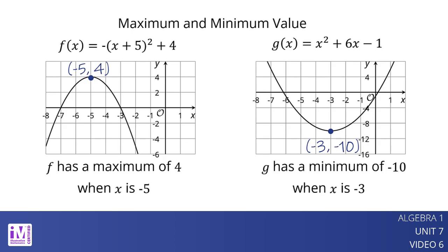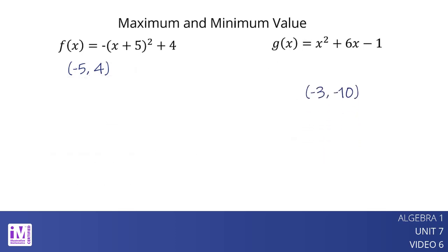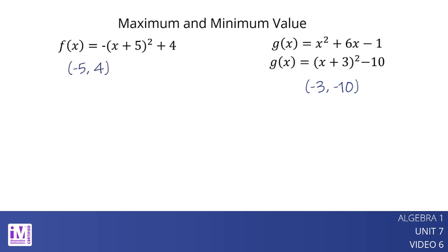How can we know without graphing whether the vertex of the graph is its minimum or its maximum? The vertex form can give us that information as well. Let's look more closely at function g. To see if the vertex (-3, -10) is a maximum or a minimum of g, we can rewrite x squared plus 6x minus 1 into vertex form. So g(x) equals the quantity x plus 3 squared minus 10.